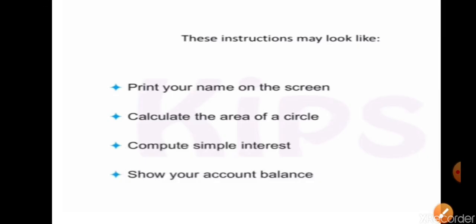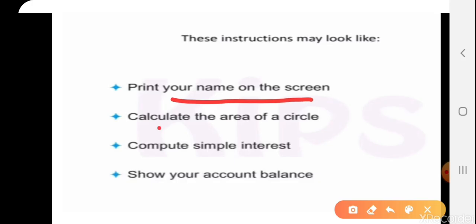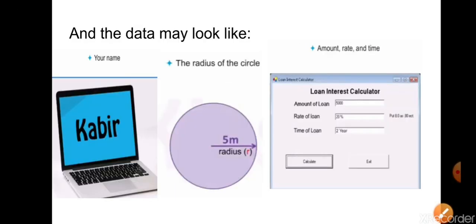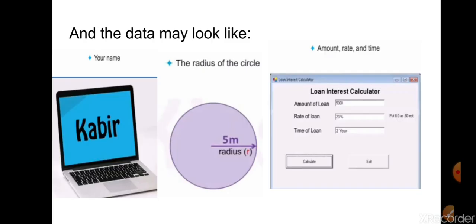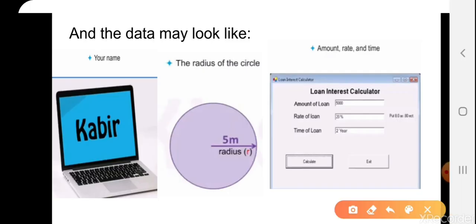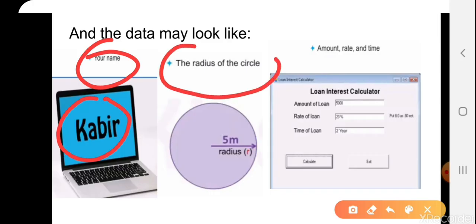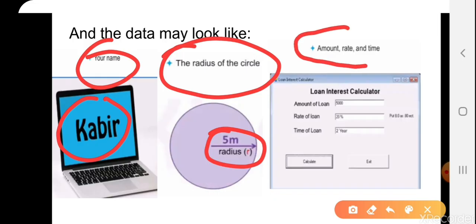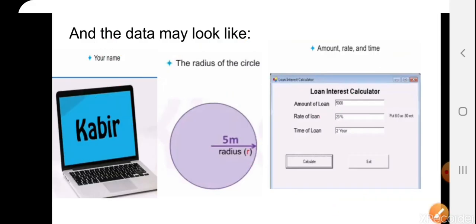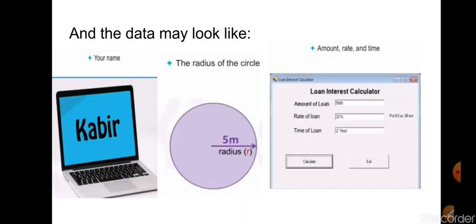These instructions can look like: print your name on the screen, calculate the area of a circle, compute the simple interest, or show your account balance. The corresponding data would be: your name; the radius of the circle to compute its area; and the amount, rate, and time in the case of simple interest. So in any computer program, we require step-by-step instructions and the data.